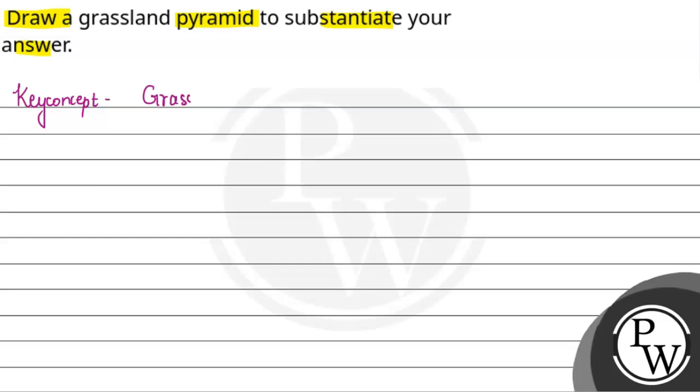So if we discuss here the grassland pyramid or a grassland ecosystem, what is the number of producers in the grassland ecosystem?